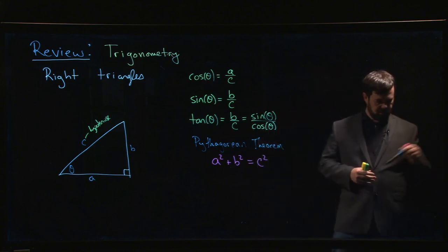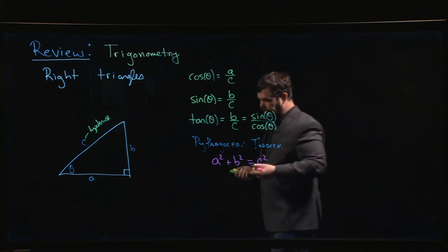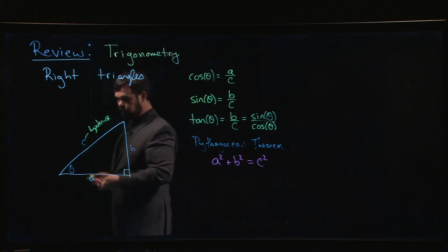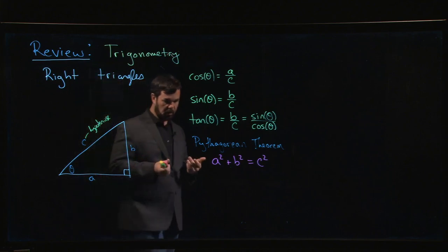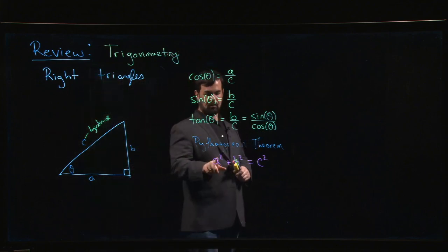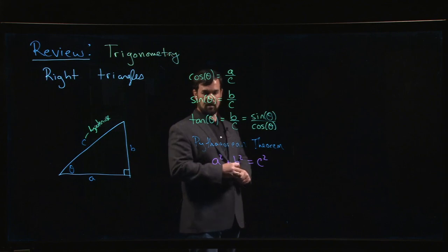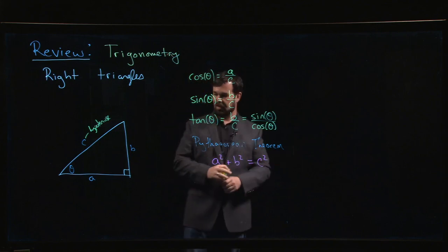And there are lots of so-called Pythagorean triples, examples of integer values for A, B, and C that fit this equation. The most commonly known one is your 3, 4, 5 triangle. So 3 squared plus 4 squared is 9 plus 16, which gives you 25, which is 5 squared.